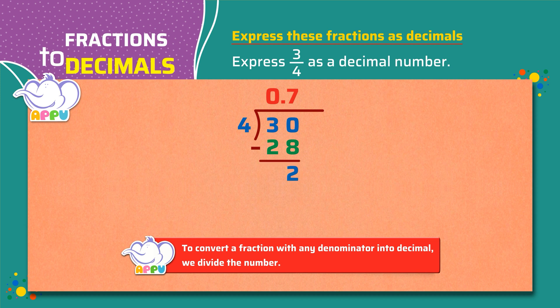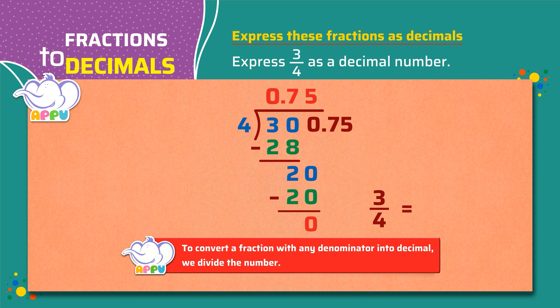Now we place 0 next to 2. We get 20. We divide again. 4 divides 20 five times. We subtract 20 from 20, we get 0. So 3 by 4 is equal to 0.75.